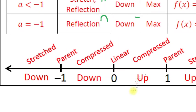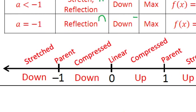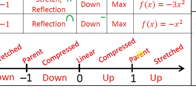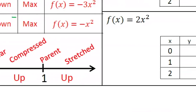Here's another way to summarize this. If a equals zero, you get a linear graph. As you move into negatives between -1 and 0, the parabola faces down and is compressed. At -1 you have the normal parent shape facing down. Below -1, it still faces down but is stretched. Going the other direction: between 0 and 1 the parabola faces up but is compressed. At a = 1, it's the parent graph shape. Greater than 1, it still faces up but is stretched.